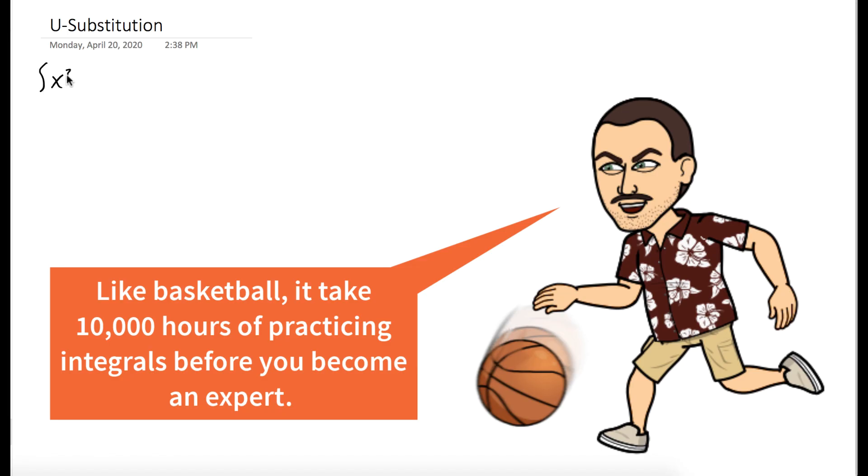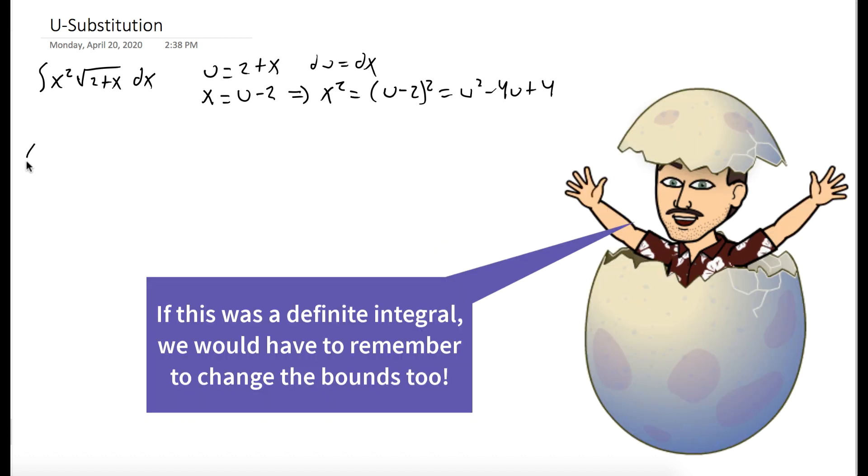So we want to evaluate the integral of x squared times the square root of 2 plus x and so what we could try is using u substitution. We'll let u be the inside of the square root so du would just be dx in this case and we still have an x squared term so let's solve for x and square it and we see that x squared could be expressed as u squared minus 4u plus 4.